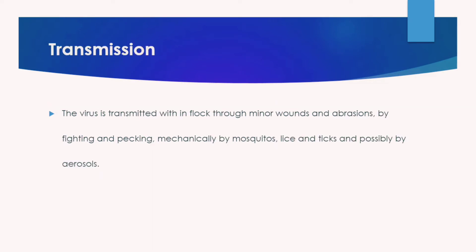Transmission of fowl pox: the virus is transmitted within a flock through minor wounds or abrasions from fighting and pecking, mechanically by mosquitoes, lice, and ticks, and possibly by aerosols. These are the main routes of transmission of avipox virus from one bird to another and from one species to another.